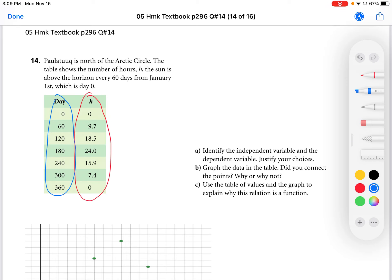So the dependent variable is the hours and the independent variable is the days. The number of hours that the sun is above the horizon is dependent on the day of the year.